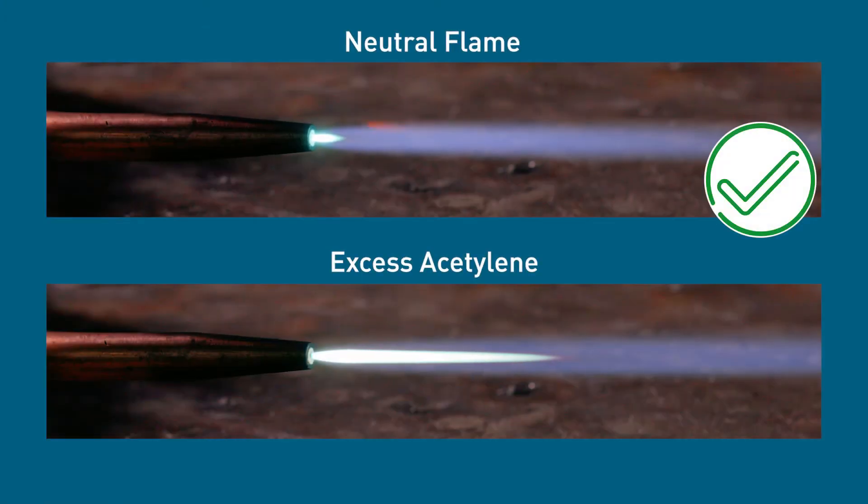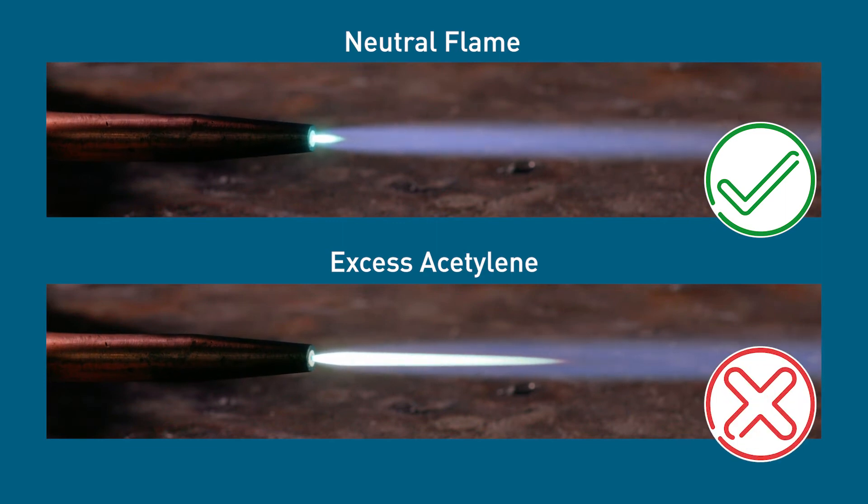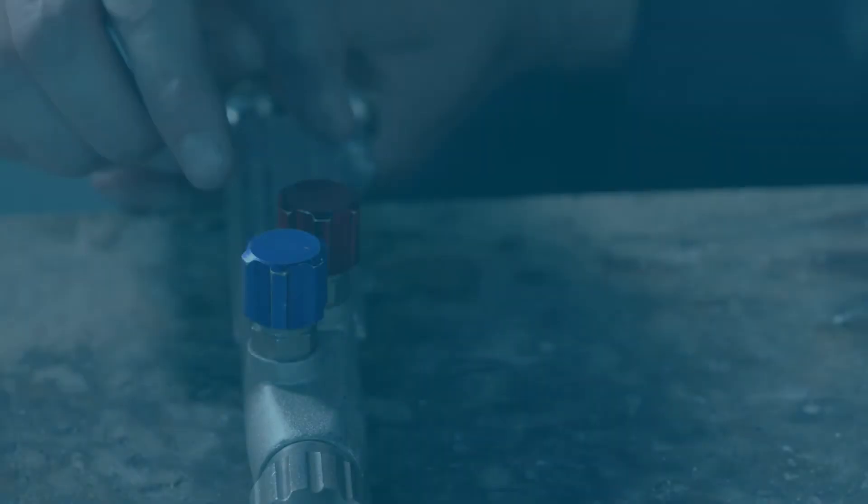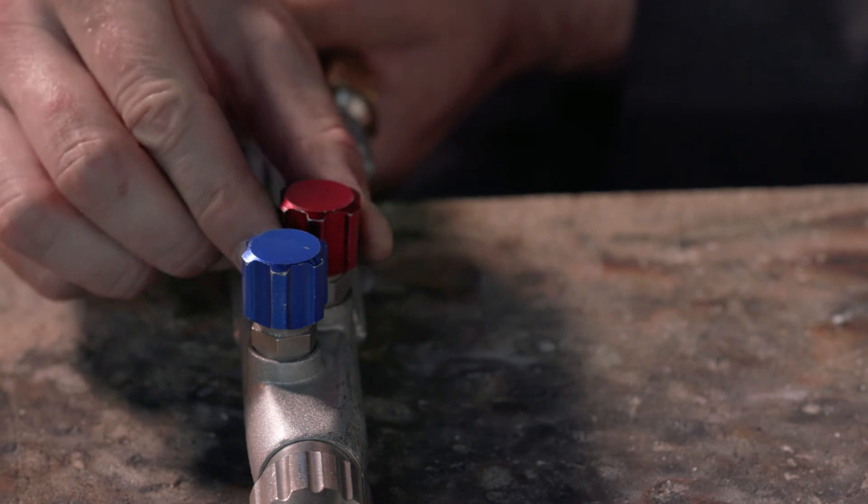If the blue cone is undefined and feathering around the edges, then there's an excess of acetylene. Reduce the acetylene by gently turning the red tap in a clockwise direction.